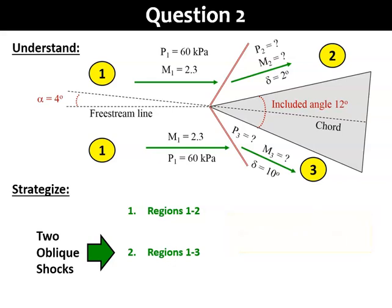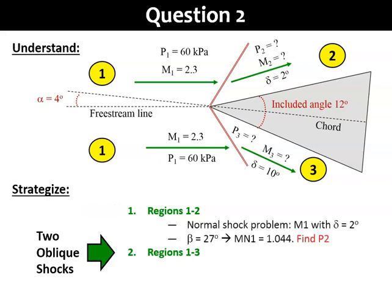Now, the beta values for each case is different, because the deflection angle delta is different. Continuing with the first case, from the oblique shock chart with M1 equals to 2.3, and delta of 2 degrees, we'll get a beta of about 27 degrees. That will give an Mn1 of 1.044. Notice that the value of Mn1 is very small, which means that the oblique shock produced will be a very weak wave, with small flow compression across the shock.